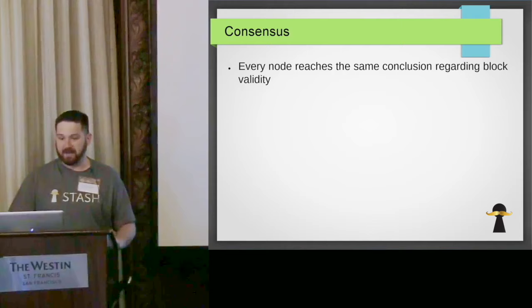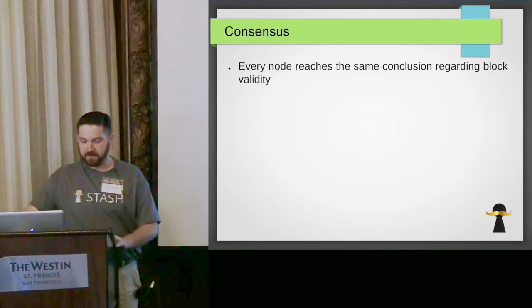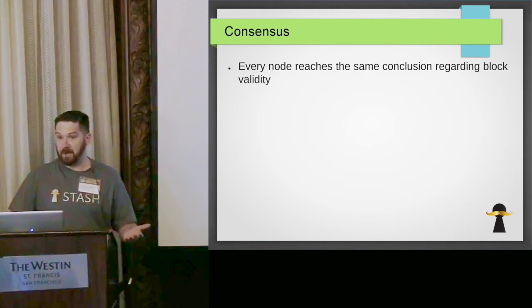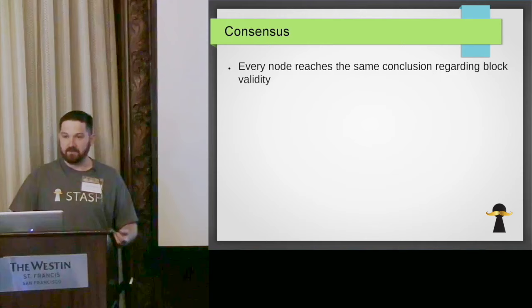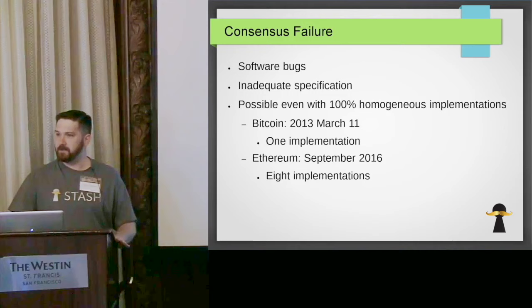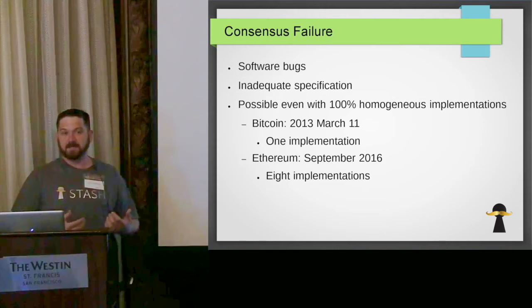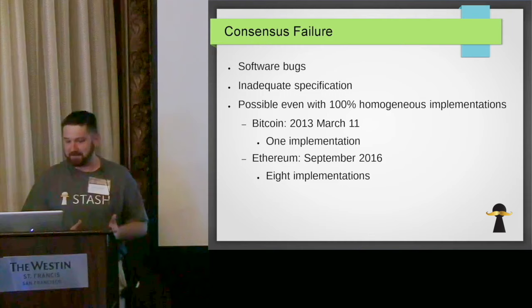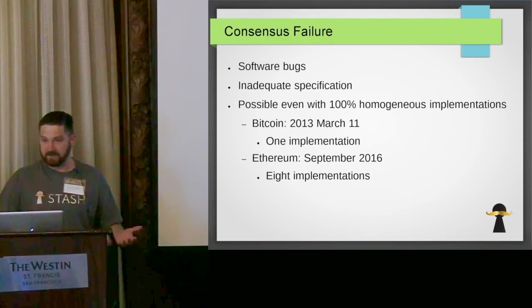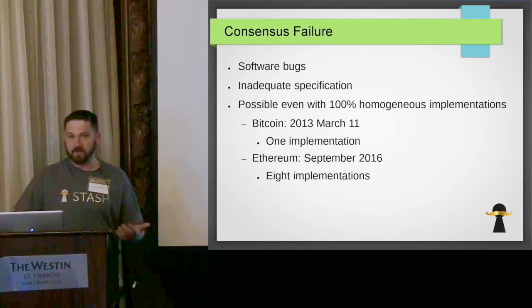When this doesn't happen, we have a consensus failure. There are two ways you can think of a consensus failure. There could be a software bug, as in the software has failed to exhibit the behavior intended by the programmer. Software is not perfect. So one of the ways in which we can have a consensus failure between nodes is that there's just a bug in the software.